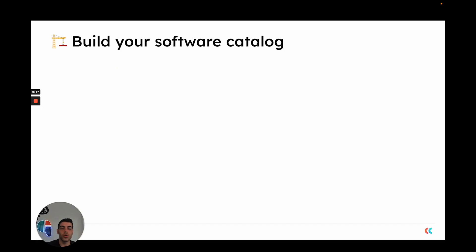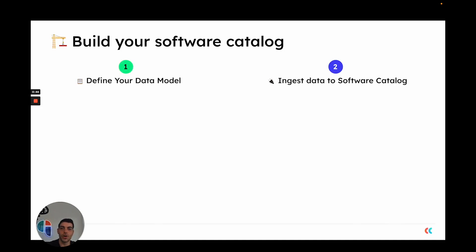So how do you go about building your software catalog? At Port, building a software catalog is comprised of two steps: the first is defining your data model, and the second is ingesting data into the software catalog that you build.